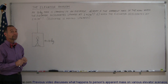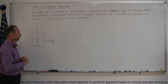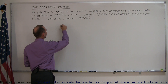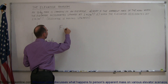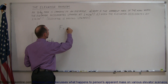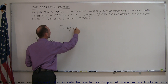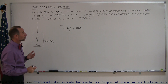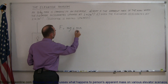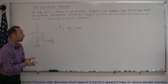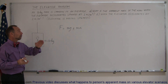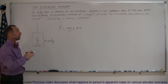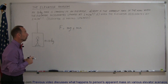The way you work this out is that the force acting on the bathroom scale is equal to the weight of the man plus the force required to accelerate the man either upward or downward — so this is a plus or minus. If the elevator accelerates upward, we use plus ma. If the elevator accelerates downward, meaning it's slowing down, we use minus ma.